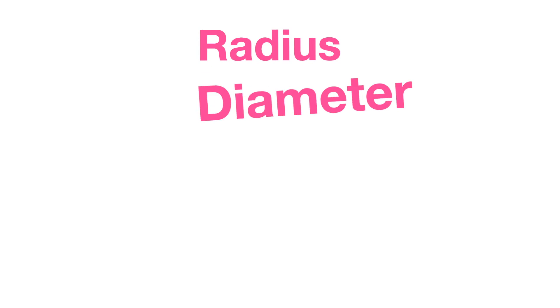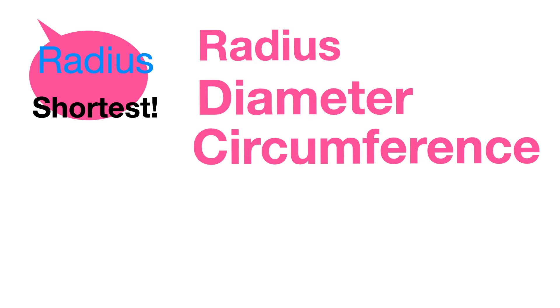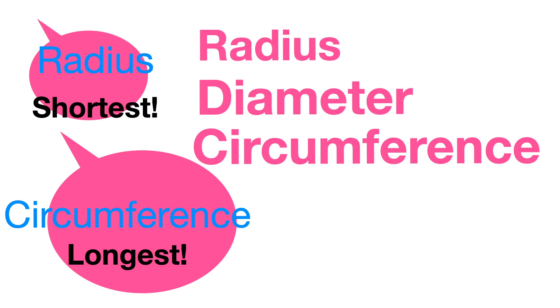We learned about radius, diameter, and circumference on a circle. Radius is the shortest measure. Diameter is longer. Circumference is the longest.